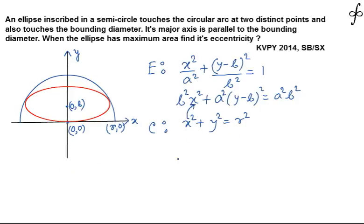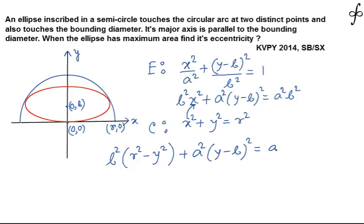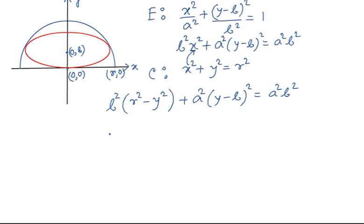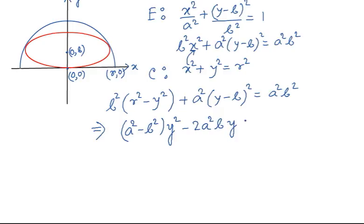Eliminating x² by substituting x² = R² − y² from the circle equation into the ellipse equation gives: B²(R² − y²) + A²(y − B)² = A²B². Expanding and simplifying, this yields the quadratic in y: (A² − B²)y² − 2A²By + B²R² = 0.